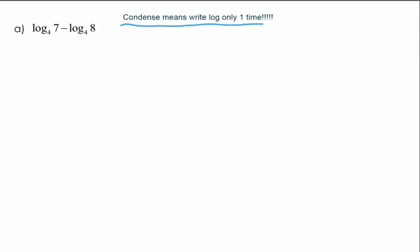To do the problem you have to have two, three, or however many logs there are all with the same base. These are both log base 4, so I can do this problem. Since they're separated by subtraction, and subtraction goes along with division, I rewrite this as log base 4 of 7 over 8. I can't simplify that 7/8 any further, so that's the end of the problem.